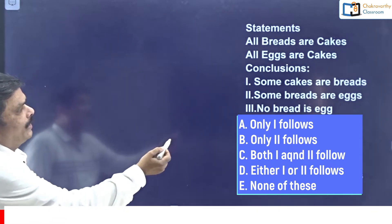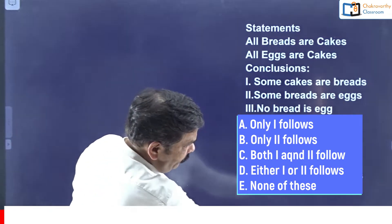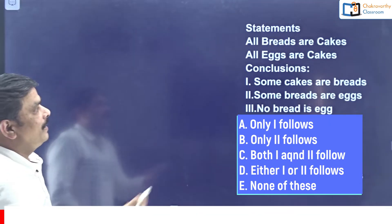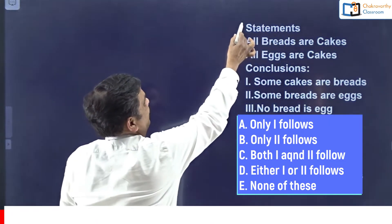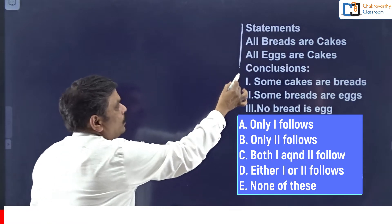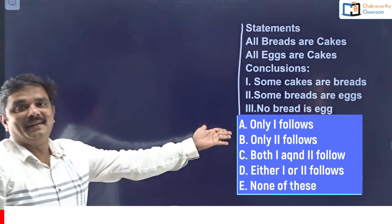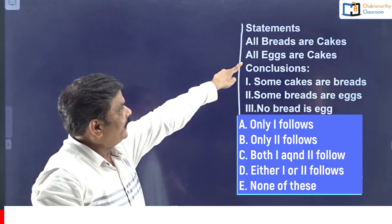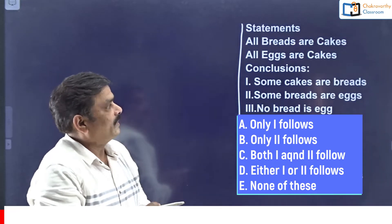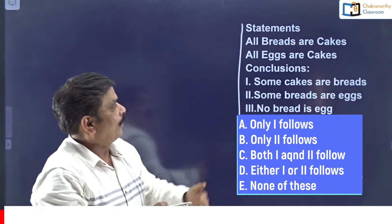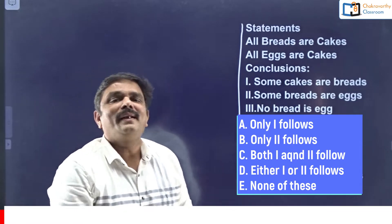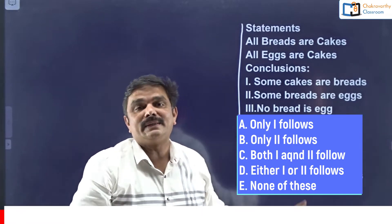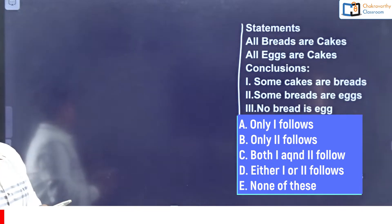Let's start with the first question - it's a simple question actually. For new students, you need not even draw the basic diagram. I told you one shortcut: when all the statements are positive and conclusions are also positive, no need of any diagram. But for beginners, let us start with the basic diagram.